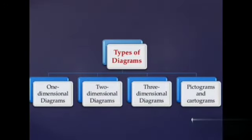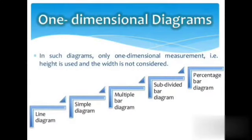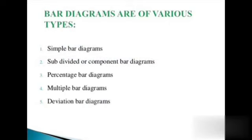These are types of diagrams, though it is not in your book, but I still give you for extra information. One-dimensional diagrams are also known as line diagram, simple diagram, multiple bar diagram, subdivided bar diagram, and percentage bar diagram. In this chapter we will not understand line diagram. We will directly start from simple bar diagram.